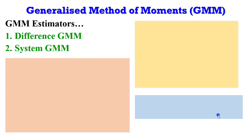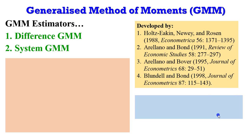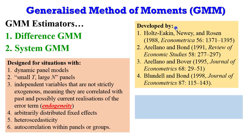Now let's talk about the two main GMM estimators: difference GMM and system GMM. You cannot discuss these without referring to the key authors shown on screen. To get a basic understanding of GMM, you should read at least one of these papers. They are definitely technical, but honestly, if you really want to know more about GMM, I encourage you to read through them.